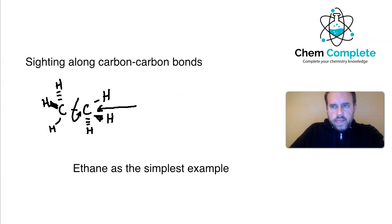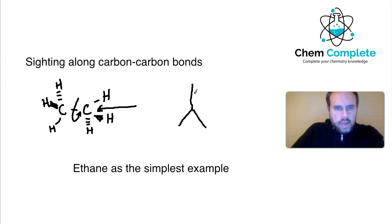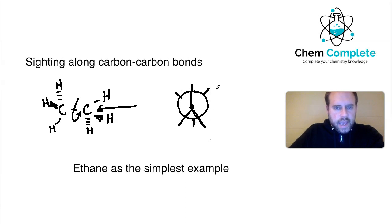To draw a Newman projection, we draw an upside-down Y figure and then a circle in the middle. This represents the carbon-carbon structure we're looking at. The upside-down Y represents the front carbon, the circle represents the back carbon, and the lines represent the various substituents attached. For ethane, the front carbon has three hydrogens and the back carbon also has three hydrogens.